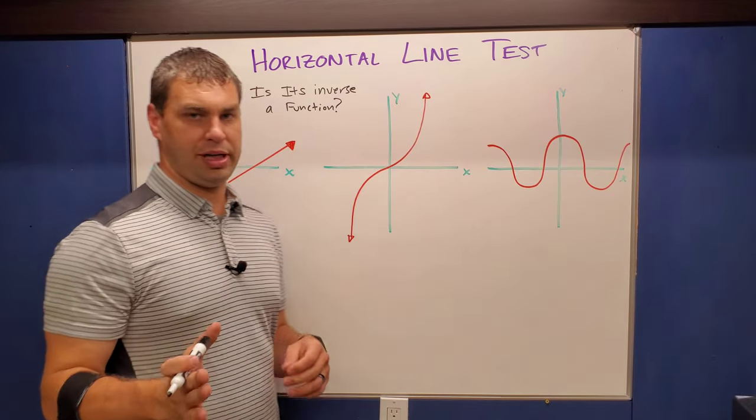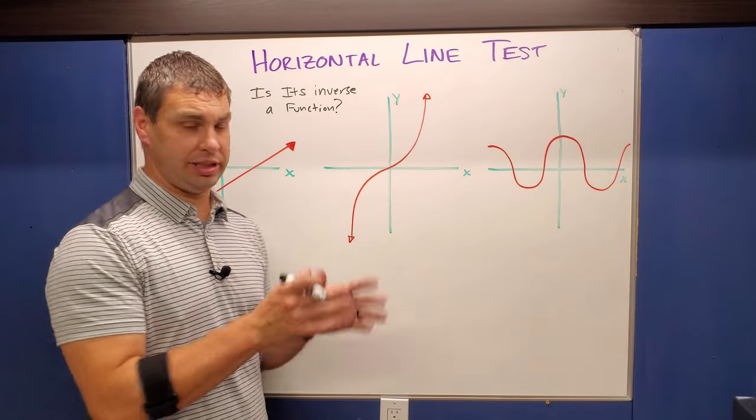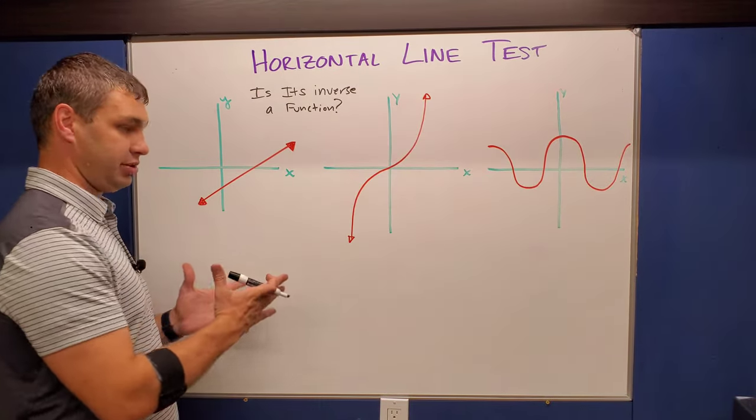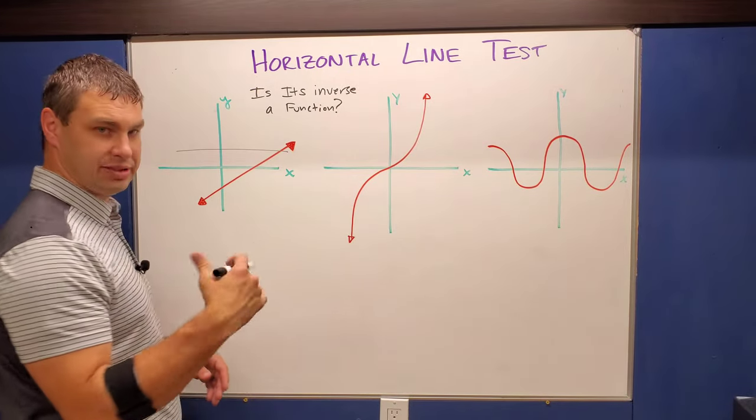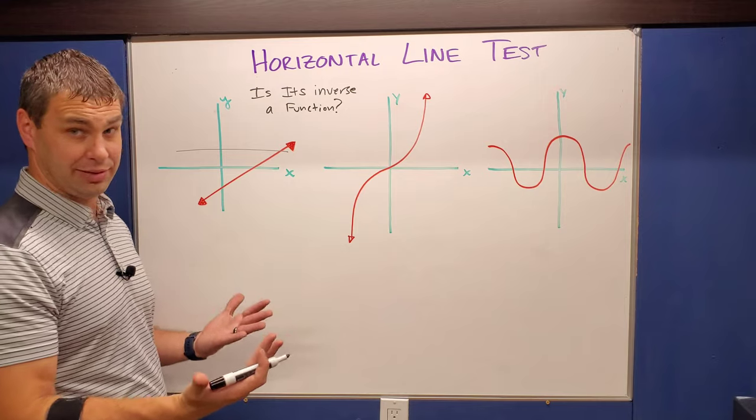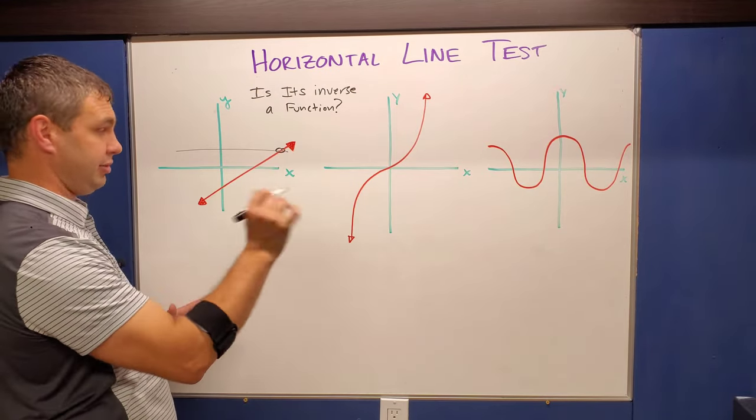Let's try a couple more. All right, a few more problems. Here it's asking us the same thing. Is its inverse a function? So looking at these graphs, we're going to decide is its inverse a function or not. And so by using the horizontal line test, now you can do more than one. That first example, I just drew one horizontal line, and it failed it right away. This time it only passes once. So that's going to pass the horizontal line test.